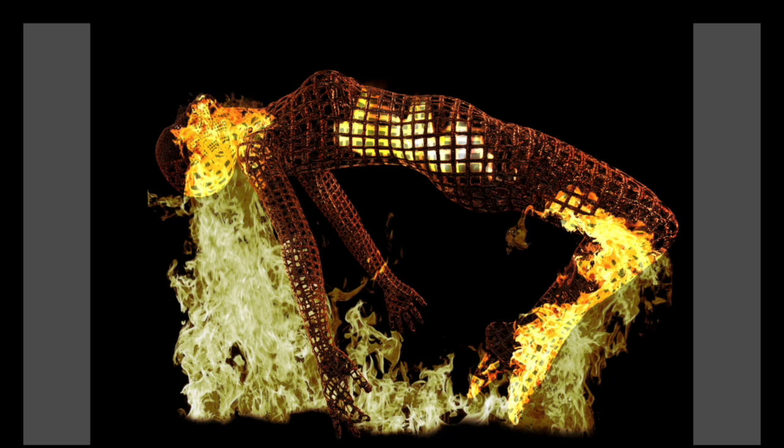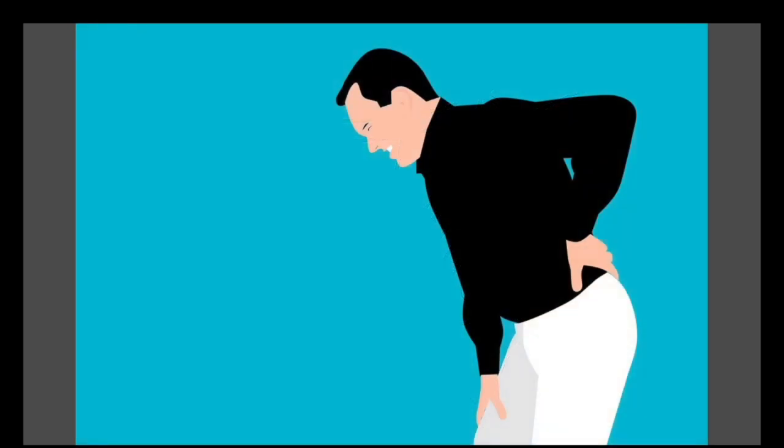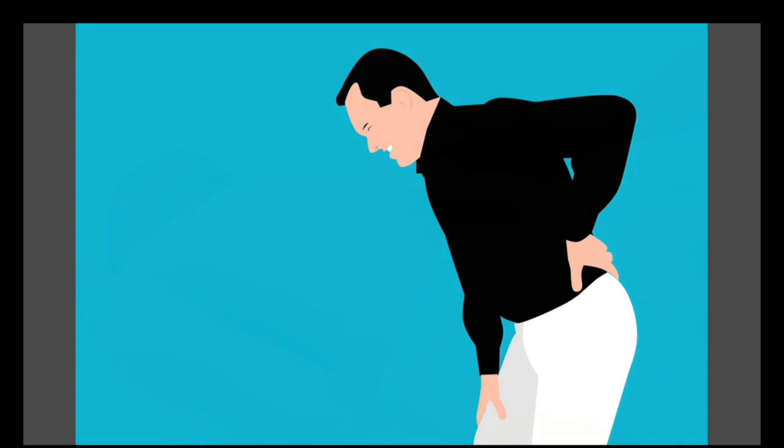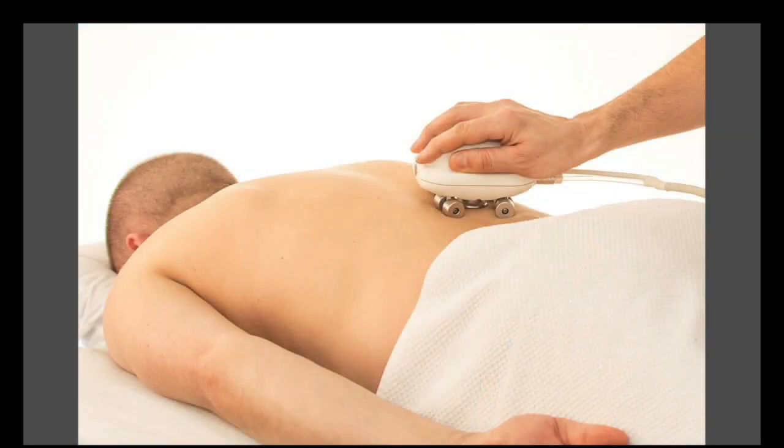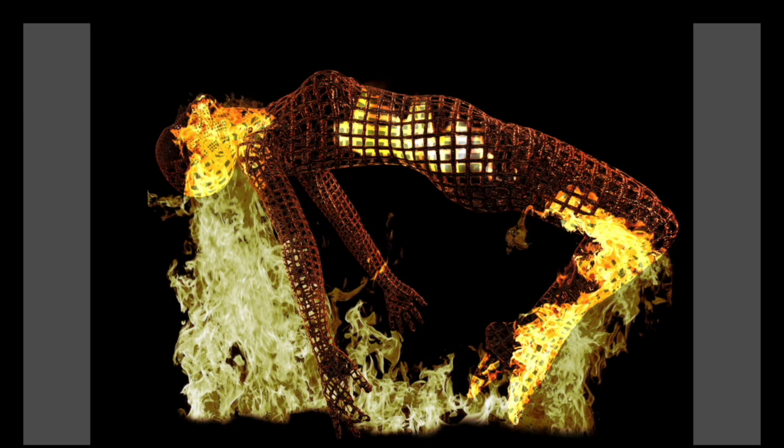The exact location of the pain is a key indicator of its cause. Left side organ pain may originate from the kidneys, pancreas, colon, or uterus. Lower left back pain refers to pain in the area above the hip or buttocks. People may feel a shooting pain under the skin or a dull ache inside the back depending on the cause.